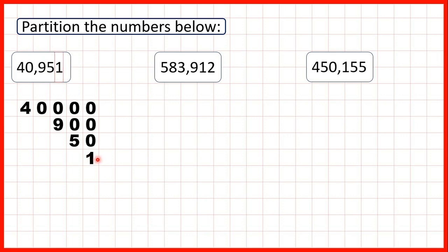Now what we can do is add up our partitioned numbers, and when we do that we get 40,951 — the number that we started with.